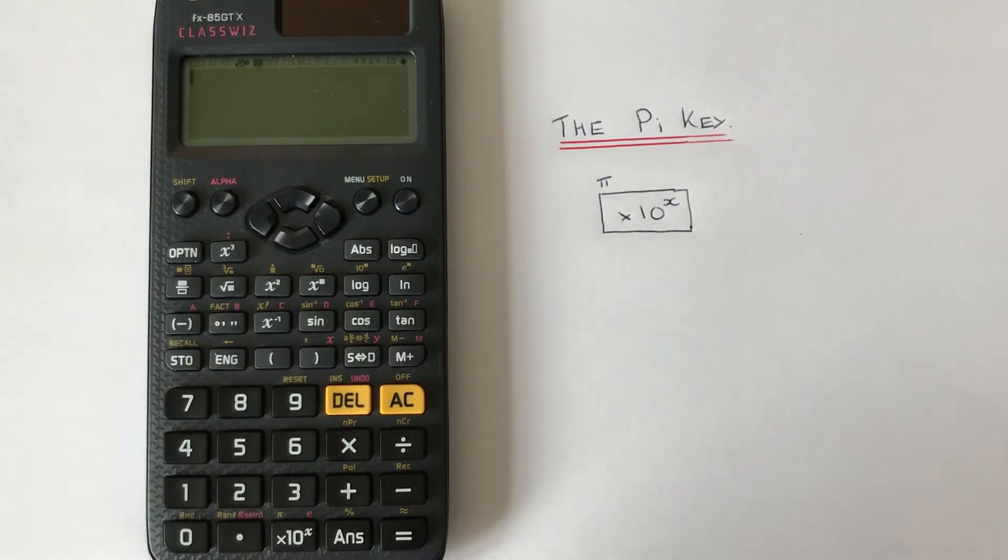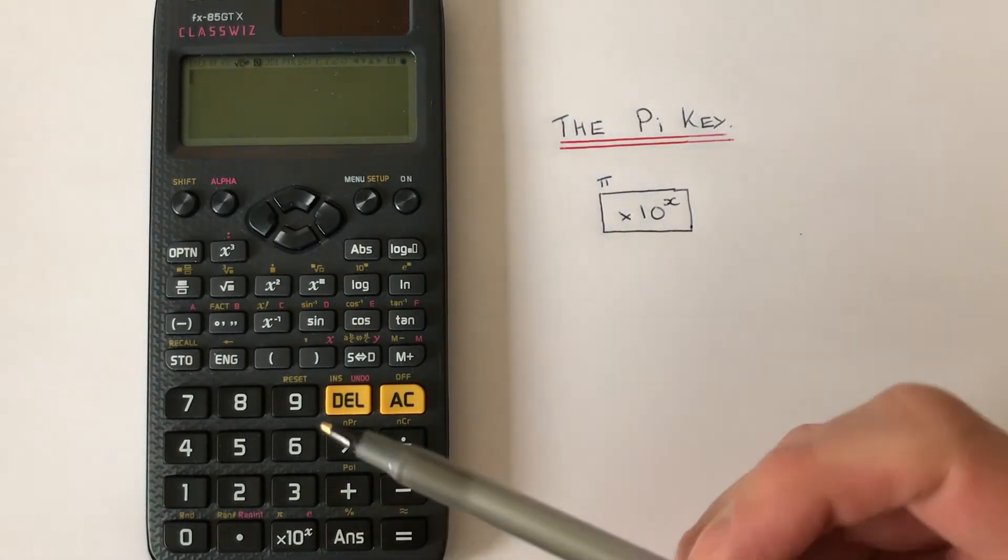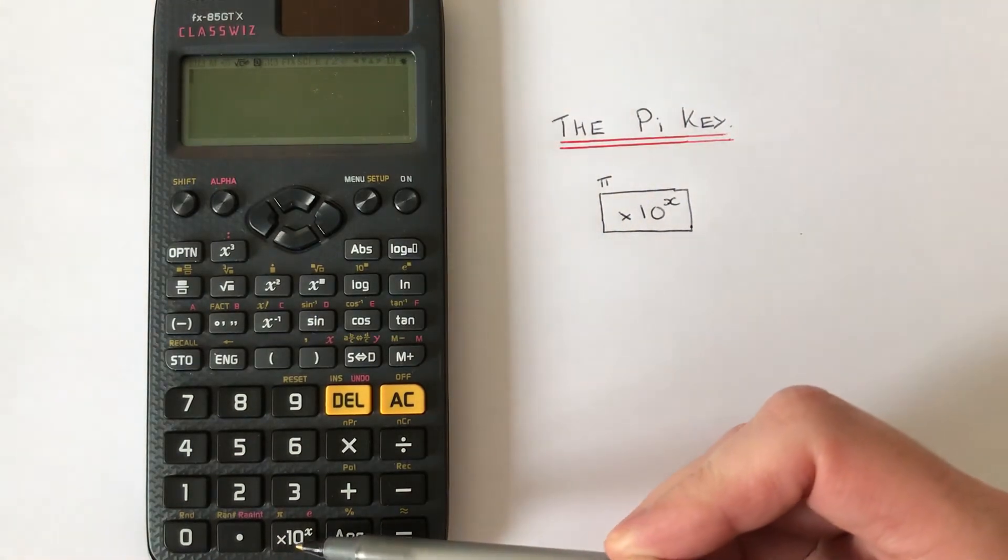Hi guys, I'm going to show you where the PI key is on a Casio ClassWiz scientific calculator. The PI key can be found right at the bottom of the calculator and it is the second function